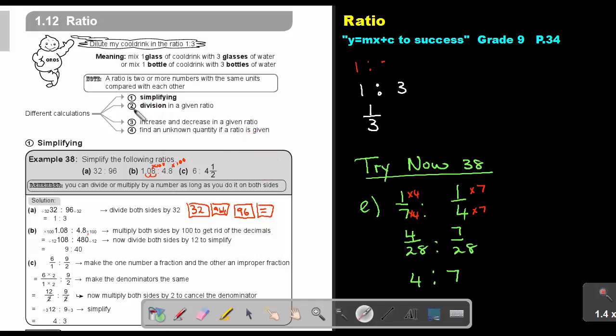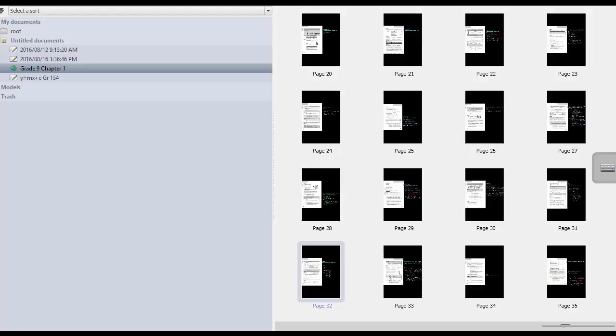So remember, simplify one, two division, three increase decrease, and four find an unknown quantity if a ratio is given. Let's go back to the exercise.